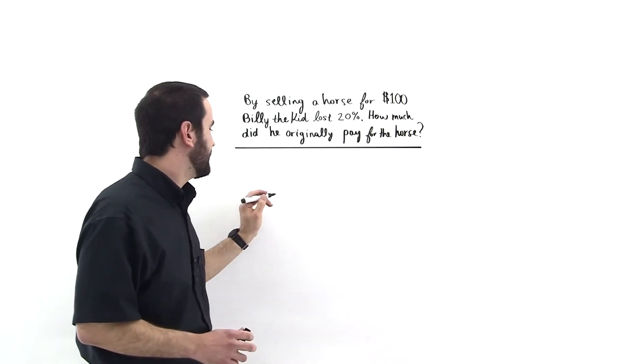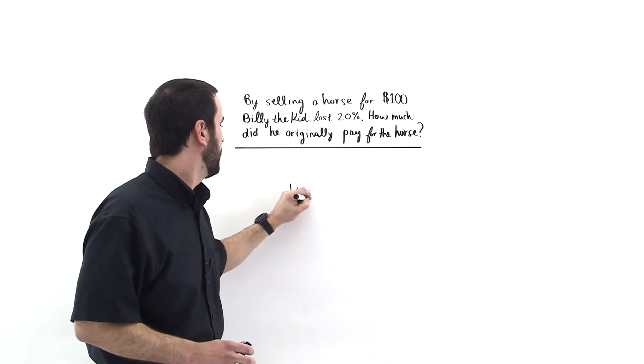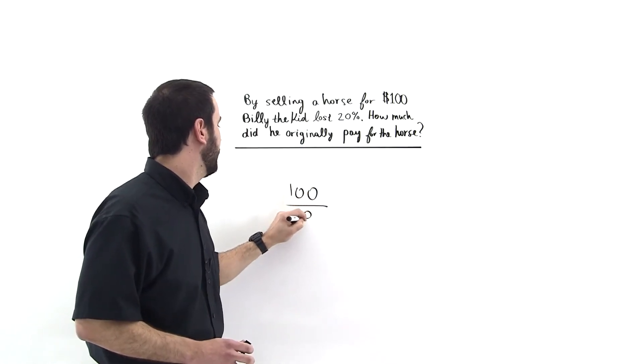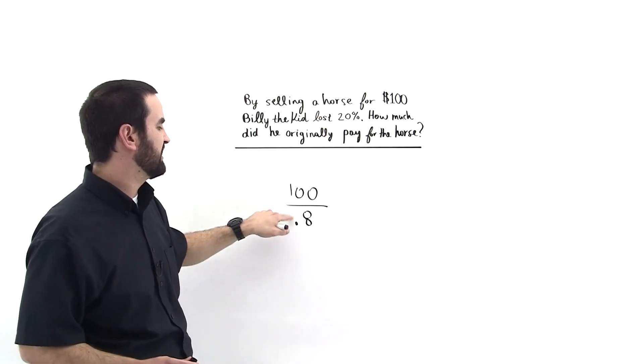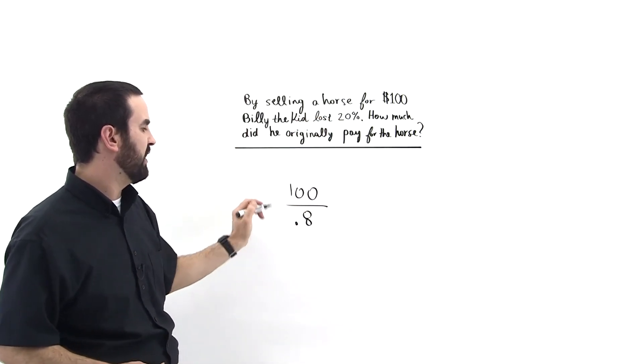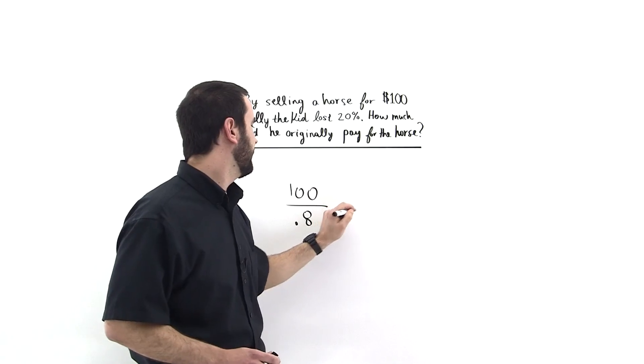So the answer is 100 divided by 0.8. It involves the loss, so you subtract 1 minus 0.2 and that's the number you're going to be dealing with. Divide 100 divided by 0.8 and that gives you 125.